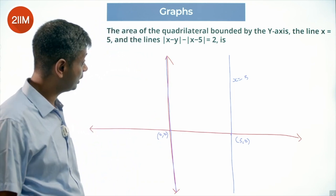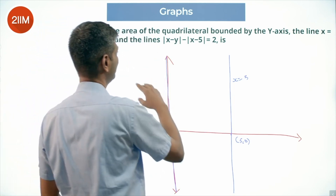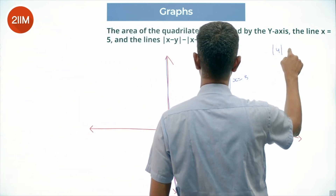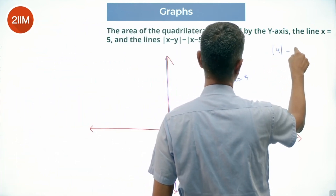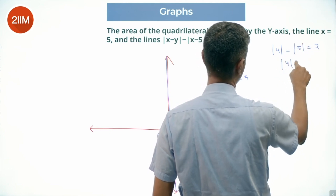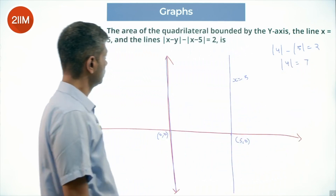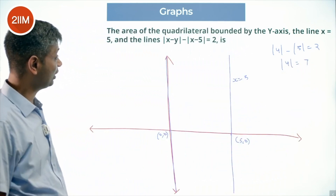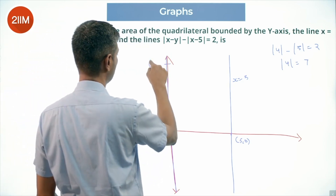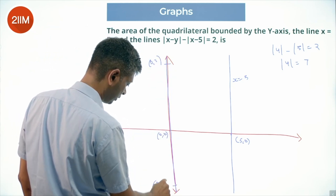For |x - y| - |x - 5| = 2, put x = 0: we get |y| - |5| = 2, so |y| = 7. Thus y = 7 or y = -7. The line cuts the y-axis at (0, 7) and (0, -7).